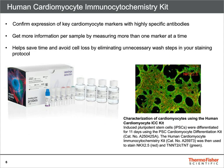A straightforward way to characterize PSC-derived cardiomyocytes is available from Thermo Fisher. The Human Cardiomyocyte Immunocytochemistry Kit enables optimal image-based analysis of two key cardiomyocyte markers, NKX2.5 and TNNT2. It is the only kit that offers superior imaging for cardiomyocytes in one box, with a complete set of primary and secondary antibodies, a nuclear DNA stain, and all of the pre-made buffers for an optimized staining experiment.